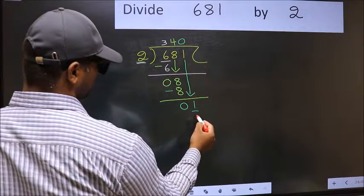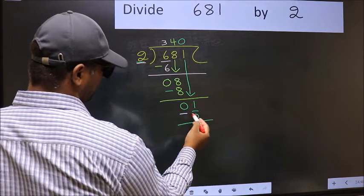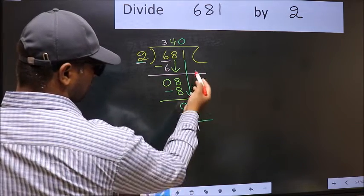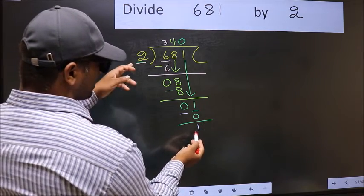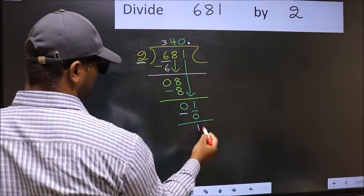So, 2 into 0, 0. Now, you subtract. 1 minus 0, 1. Over here, we did not bring any number down. And also, 1 is smaller than 2. So, now you can put a dot and take 0.